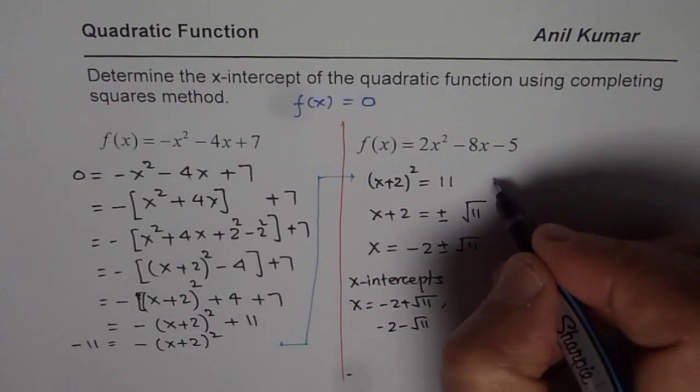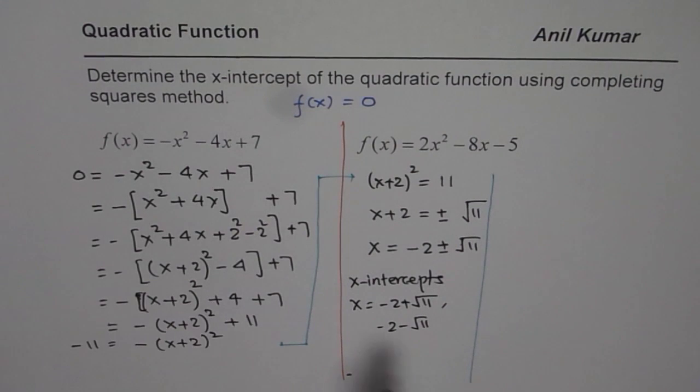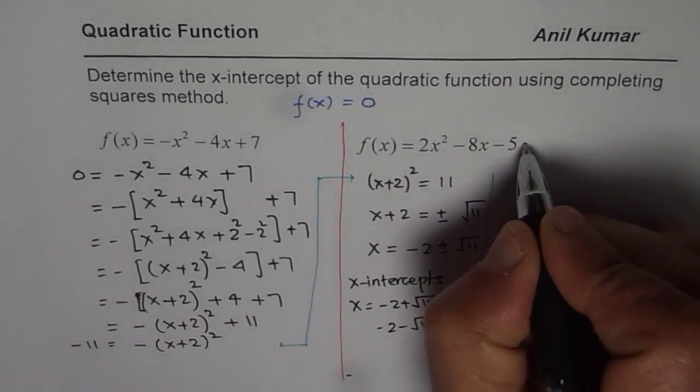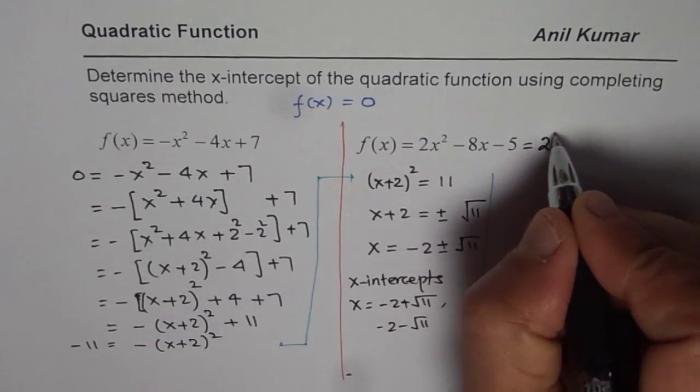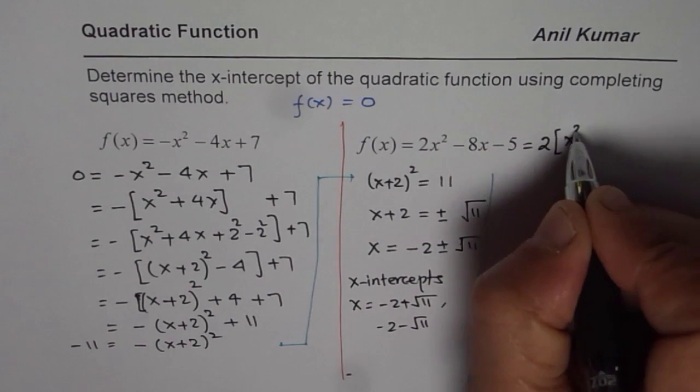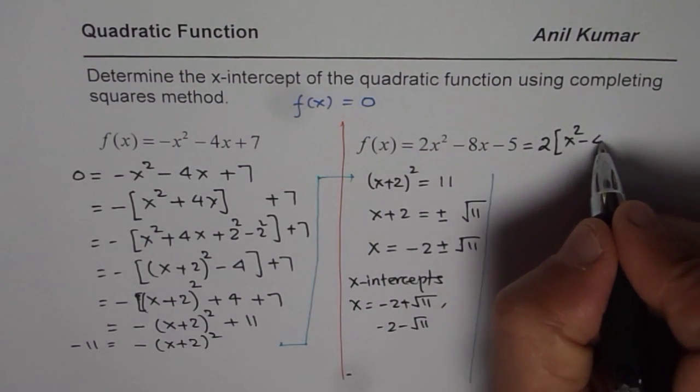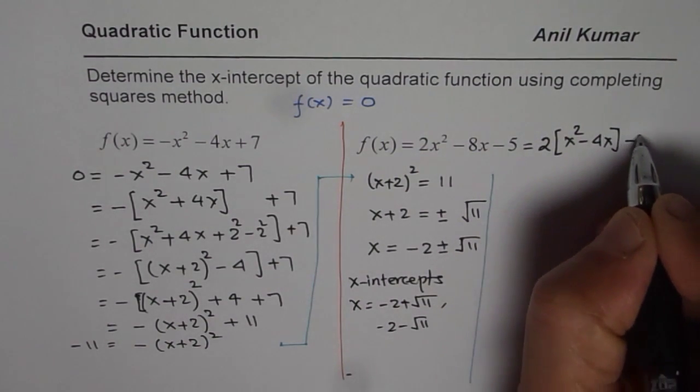So, that is how you can actually find the x-intercepts by using completing the squares method. I hope you understand and appreciate the steps. Now, let's also do the next one. So, most of you can actually pause the video. Follow these steps, do it yourself. And here is the solution for the next one.